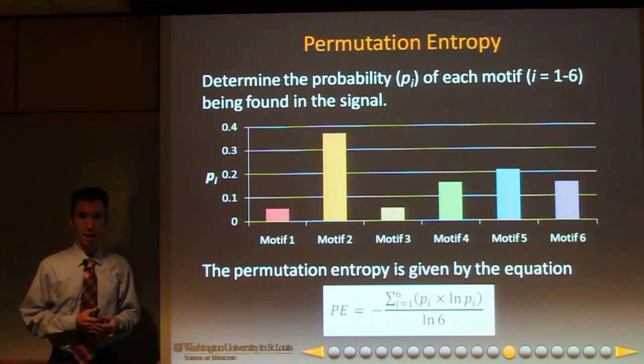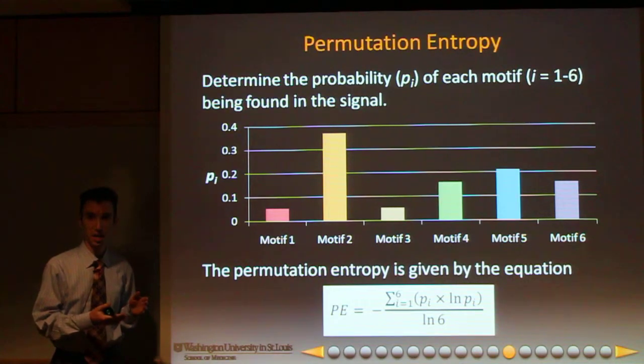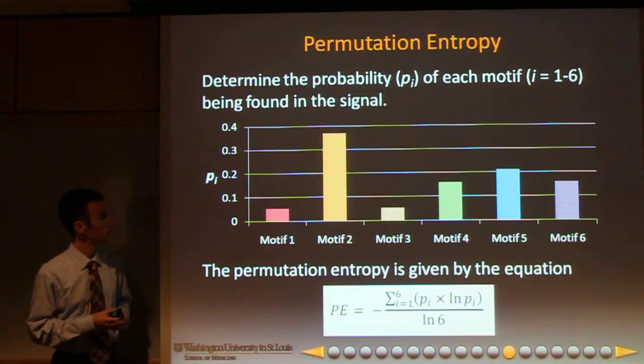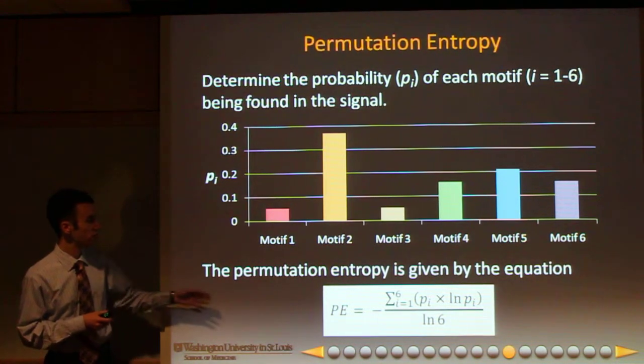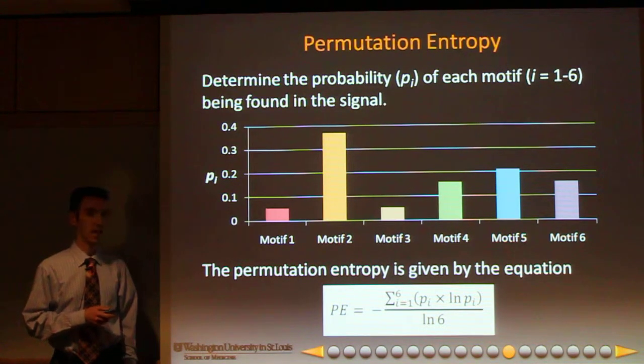We make a histogram which shows the relative occurrence of those six different motifs in our signal, and we use this equation at the bottom of the screen to calculate the permutation entropy.